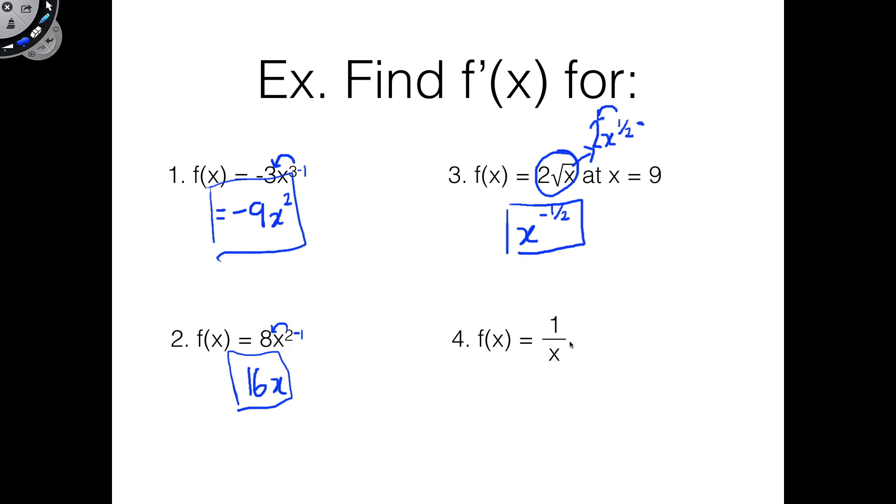Now, f(x) equals 1 over x. Again, same problem, you don't see an exponent right there. So we're going to rewrite this as x to the negative 1. So if we do a derivative of that, we just do the same thing again. Bring this down so we have negative x times, when you subtract 1 more, you have the negative 2.